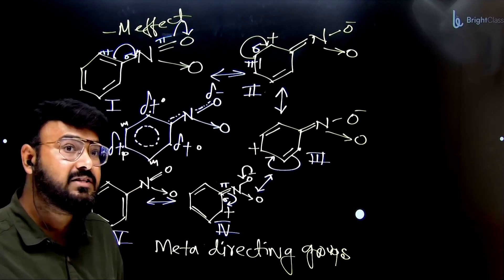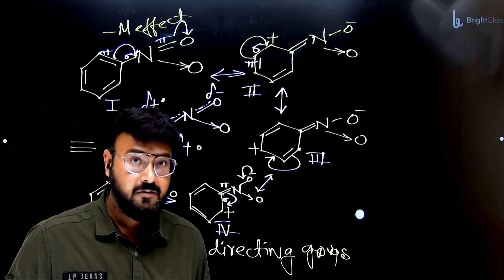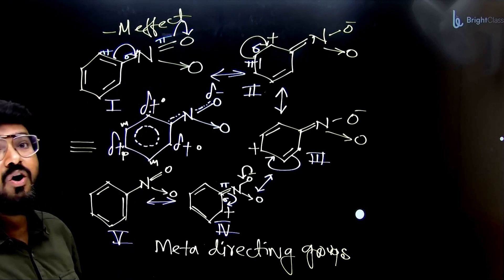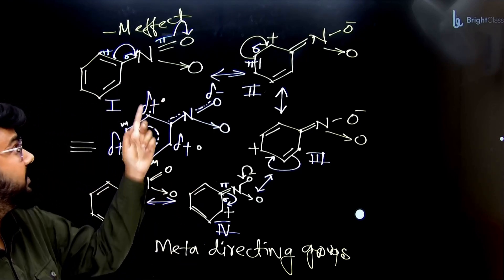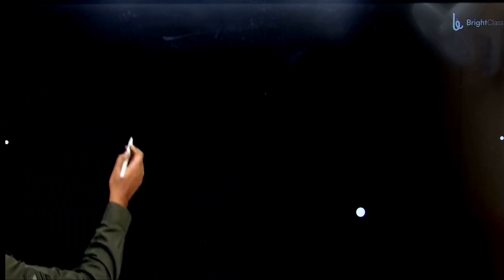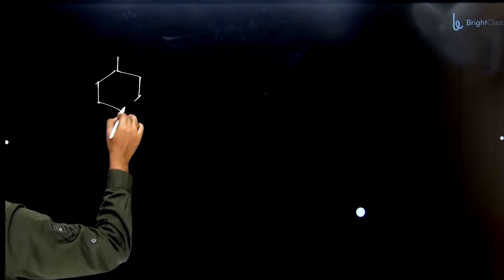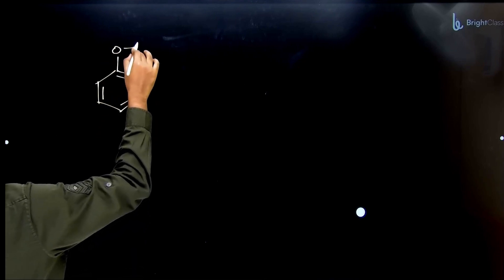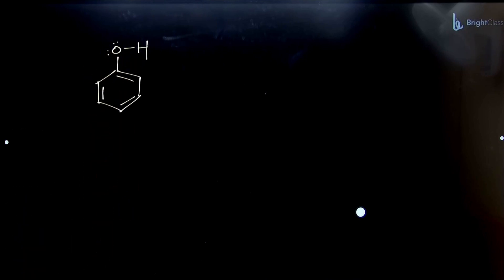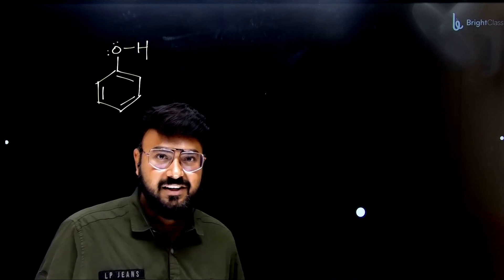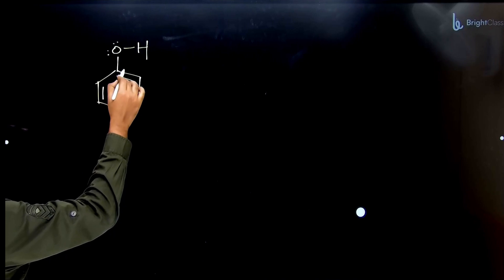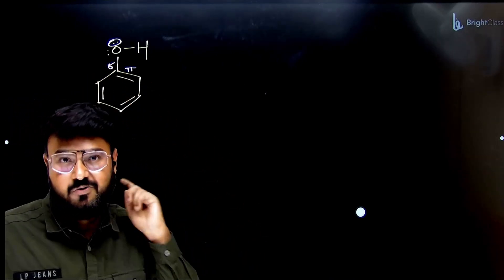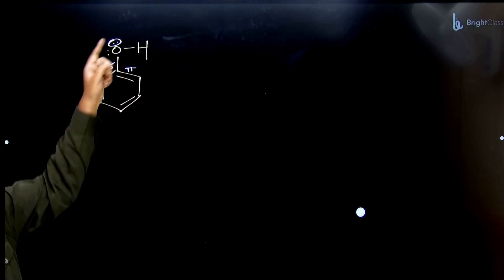Now let's take another example where we will see ortho and para directing groups — where in the resonance the lone pair is coming inside the ring, not away from it, just the opposite of this case. This shows the plus M effect. The example is phenol. Let's draw the phenol structure: a benzene ring with an OH group. Now, like we learned the conjugation pattern — do you see a pattern here? Yes — there is pi-sigma-lone pair. You can choose any one of the two lone pairs for the resonance.